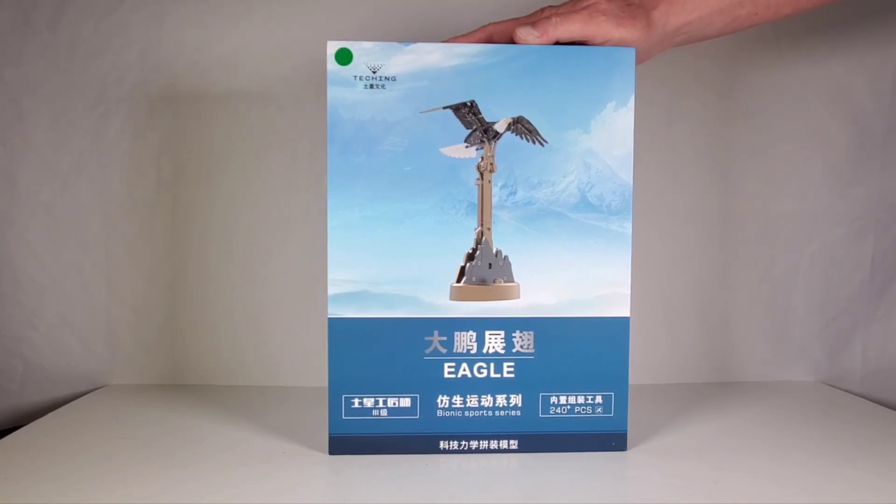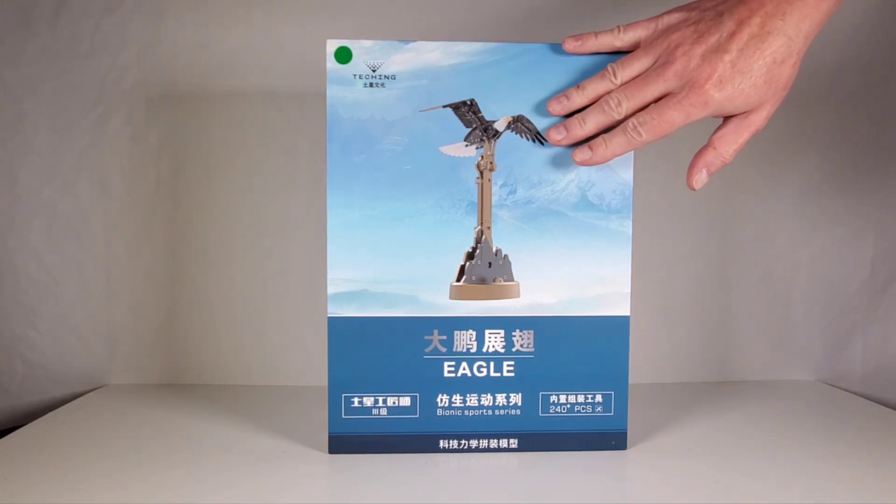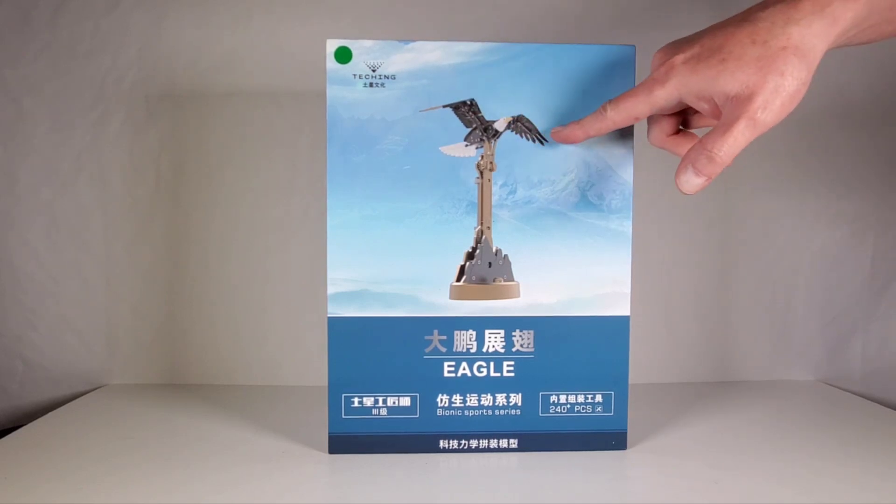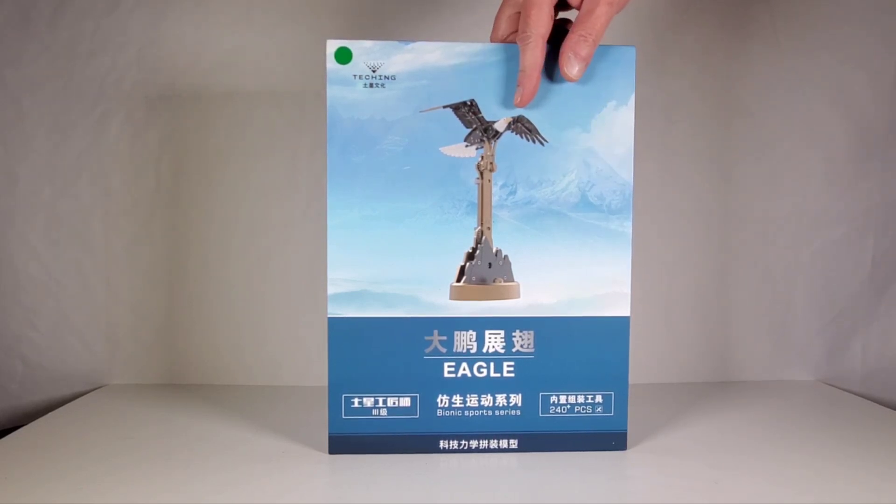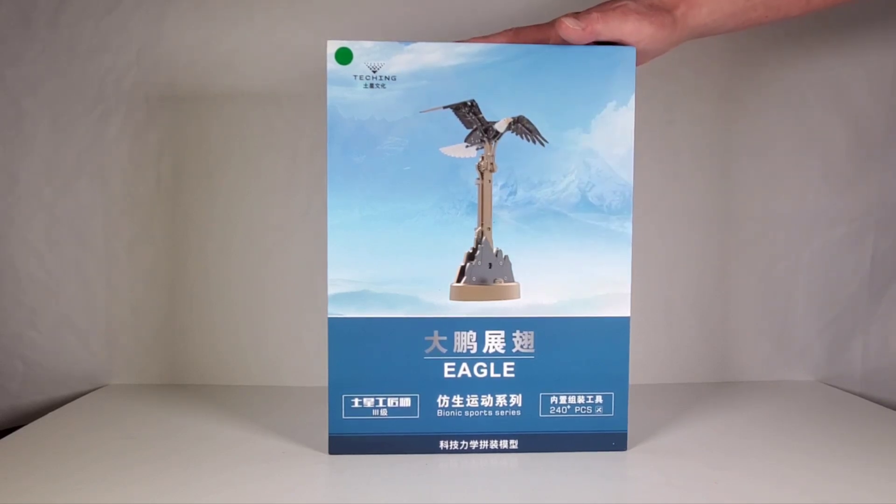So you've seen me build a couple of these kits before on this channel. I built a couple of robots and I also built a dragonfly with flapping wings. This is kind of similar to that. I got this from a website called Sterling Kit. I'll put a link down in the description below.